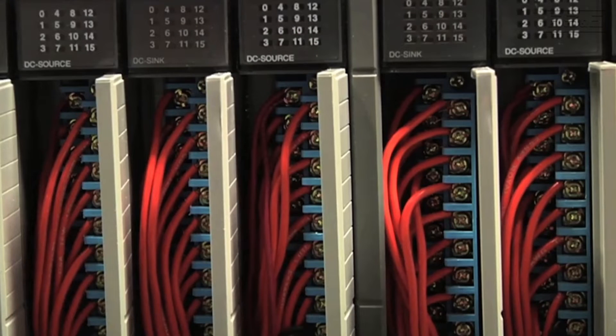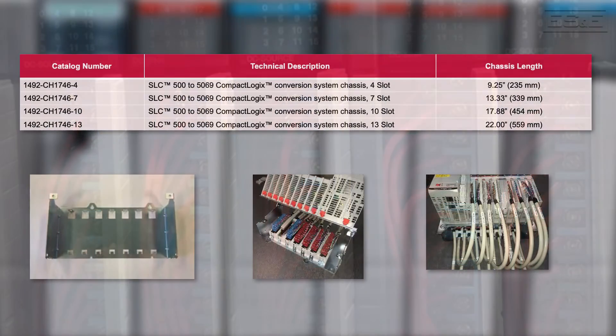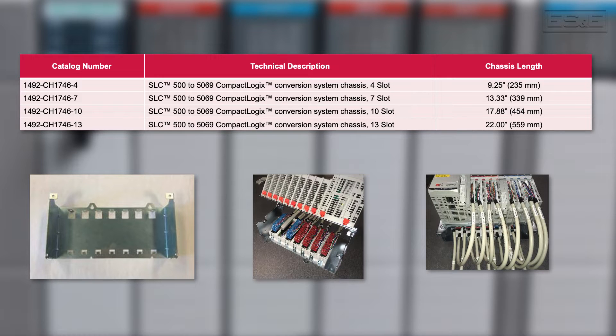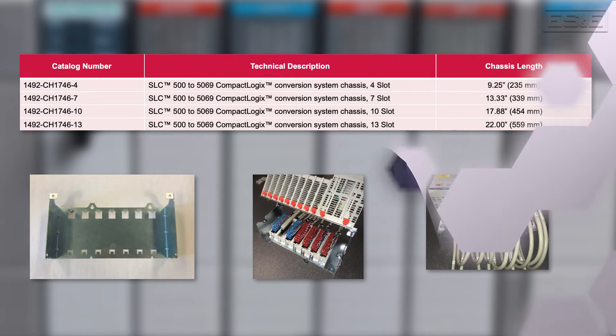If time is the critical factor, then the 1746-to-5069 hardware conversion system may be a great solution. With the conversion system, the terminal blocks — not just the wiring — are removed from the SLC I/O modules. The terminal blocks are then plugged into the adapter cables that connect directly to the new I/O modules. The 1746-to-5069 conversion system will be highlighted in a separate video. One additional idea is that once the CompactLogix processor is controlling the SLC I/O modules, new I/O modules can be added to the new processor. Then the I/O wiring can be moved to the new I/O modules.